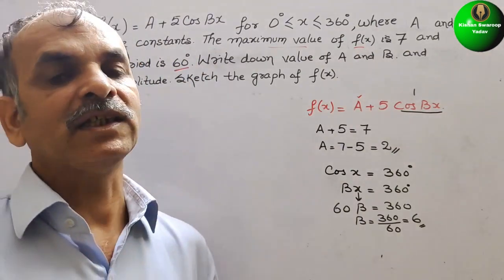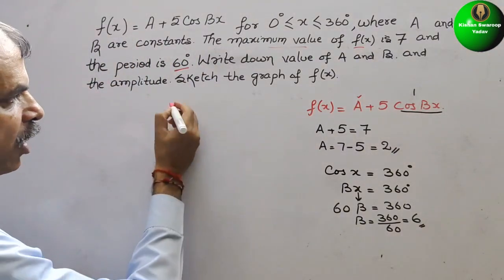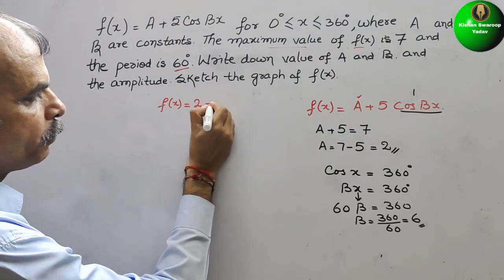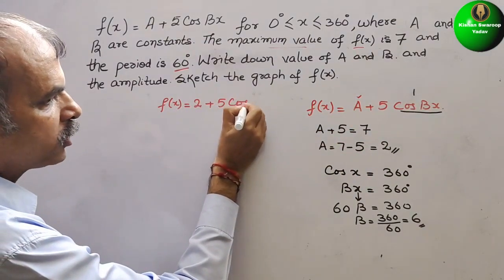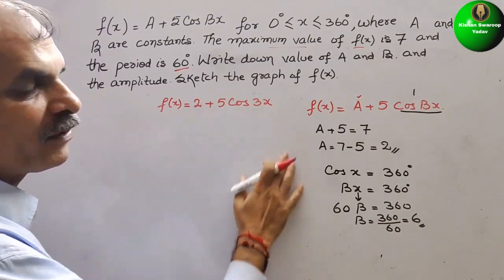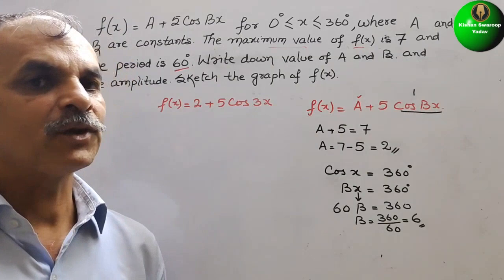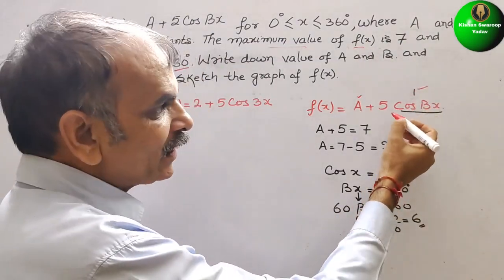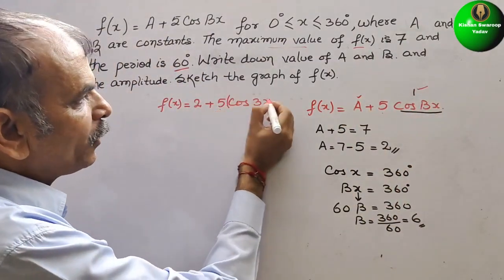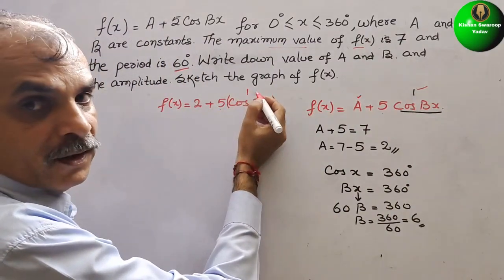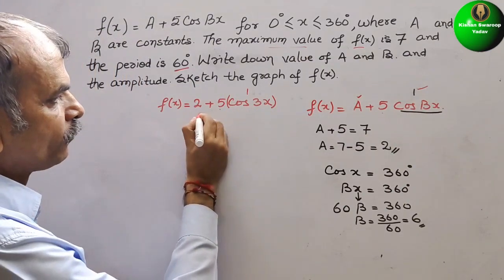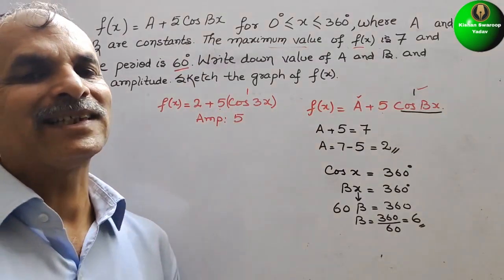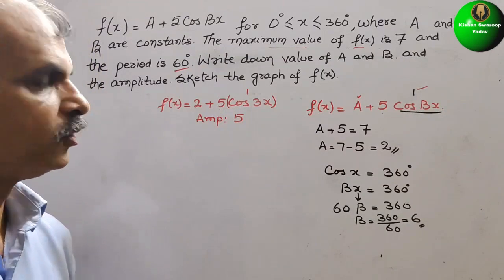Now our f(x) changes to f(x) = 2 + 5cos(6x). This is our function. Next, they ask for the amplitude. For cos(x) the amplitude is 1, but here it is multiplied by 5, so the amplitude is 5.